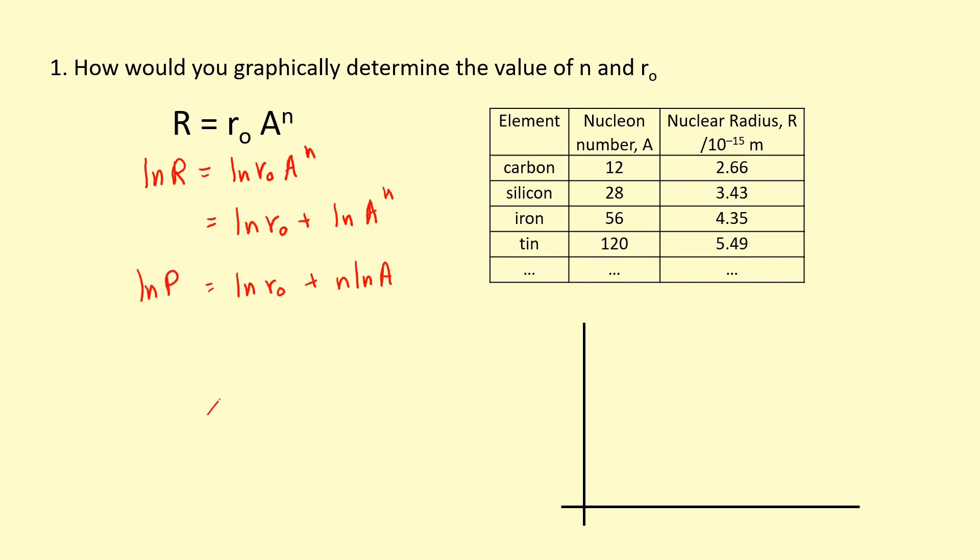Now I'm going to compare this to an equation of a line. The equation of a line is y equals mx plus c, but I'm going to put the mx over here. So if I plot on the y-axis, lnR, and on the x-axis, lnA, you should see that for my gradient, I should get N. And for my y-intercept, I should get lnR₀.